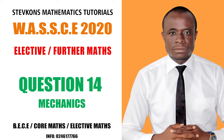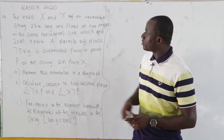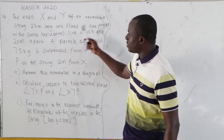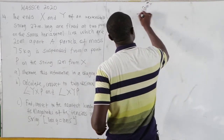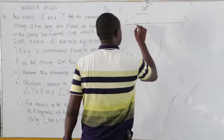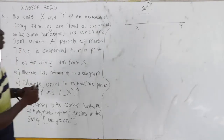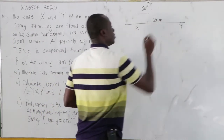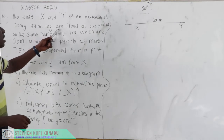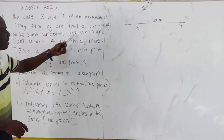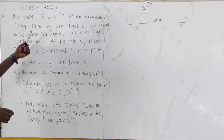This is WASSCE 2020 elective math question number 14. The ends X and Y of an inextensible string 27 meters long are fixed at two points on the same horizontal line which are 20 meters apart. So X and Y are 20 meters apart, and the length of the string is 27 meters.